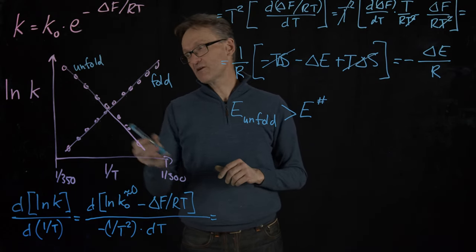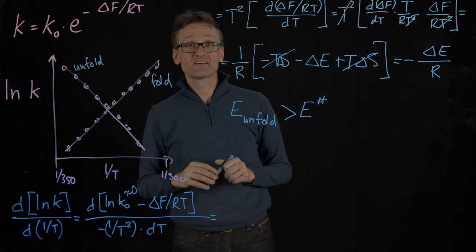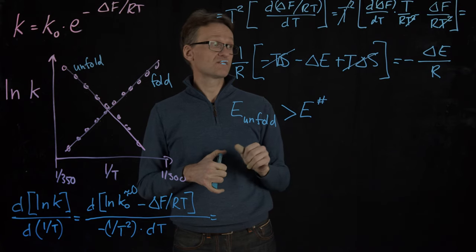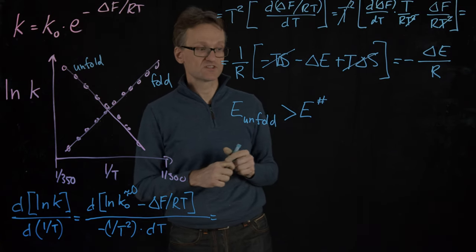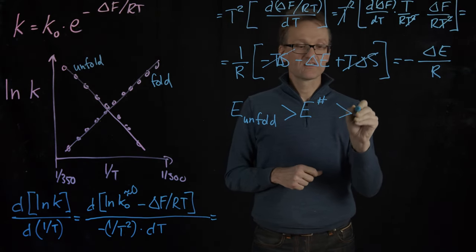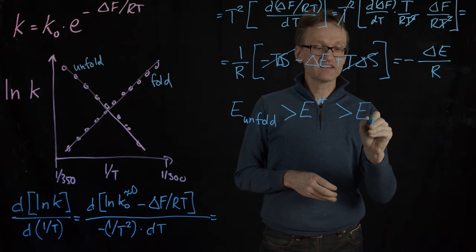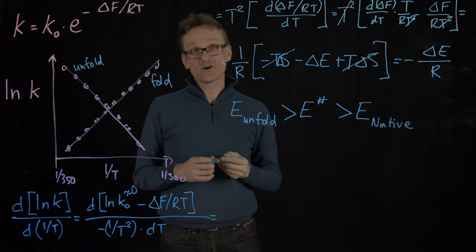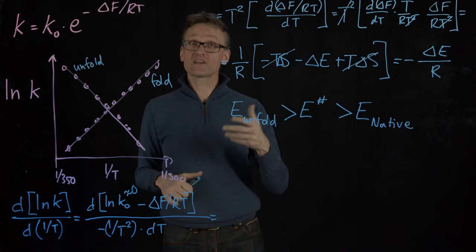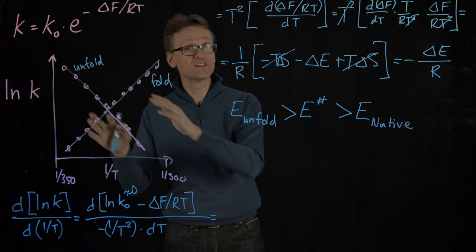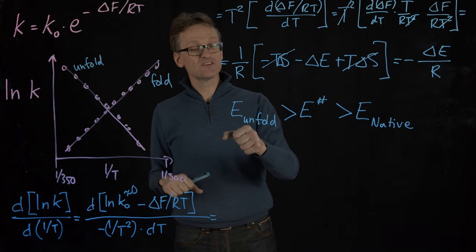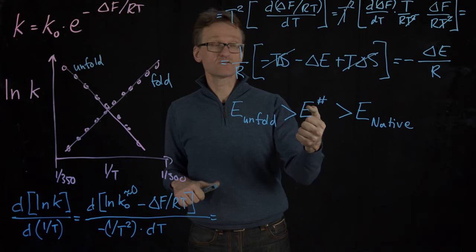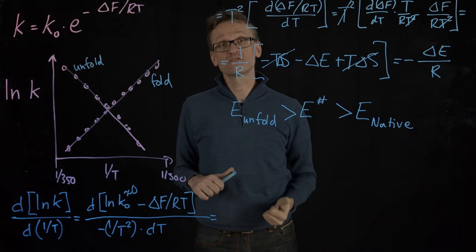If I go in the other direction, the derivative has the other sign. So that means that the energy of the folded state must be lower than the transition state. So the energy of the native state must be lower than the energy of the transition state. So as I'm folding, this was what I hand-waved about before, but now I've proven it based on experiments. The energy of the unfolded state is highest, then we drop a bit to the transition state, and then we drop even more to the native state. But it's not that the transition state is going up in energy.